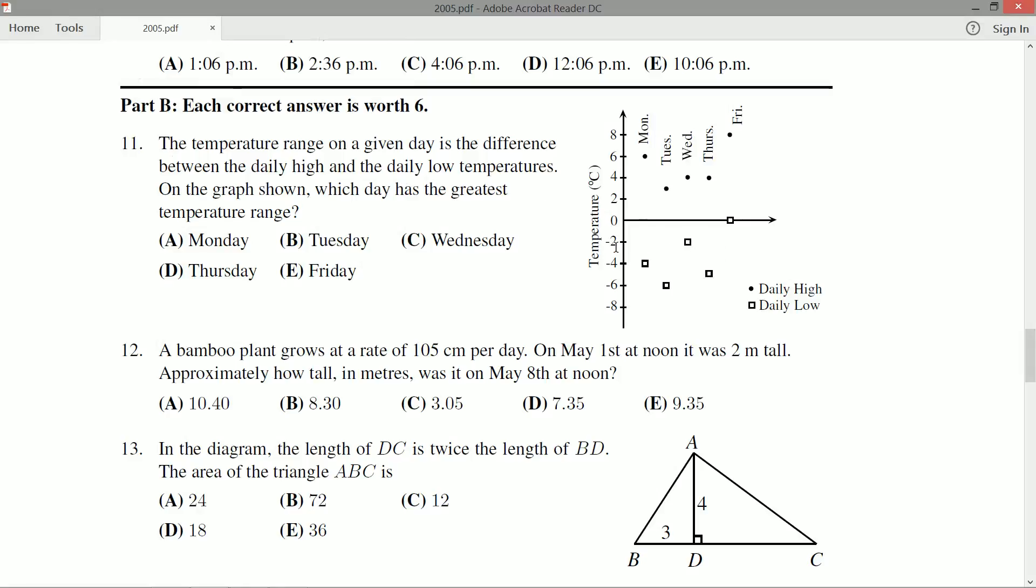So Wednesday's low is negative two, Thursday's is, well, it's between negative four and negative six, so we'll say negative five, and Friday's is zero. So negative two, negative five, and zero.